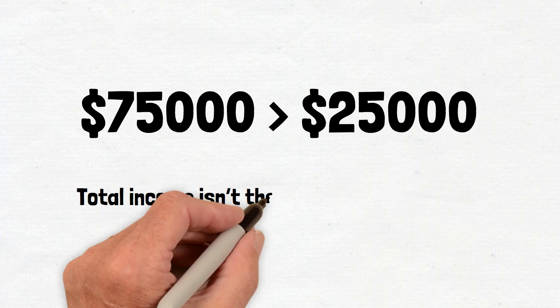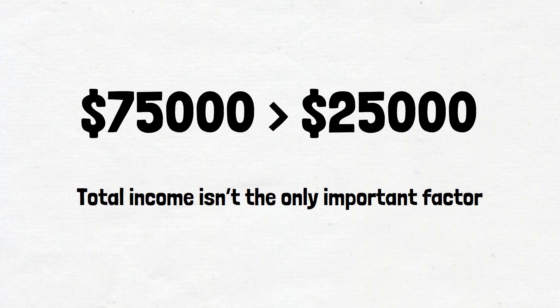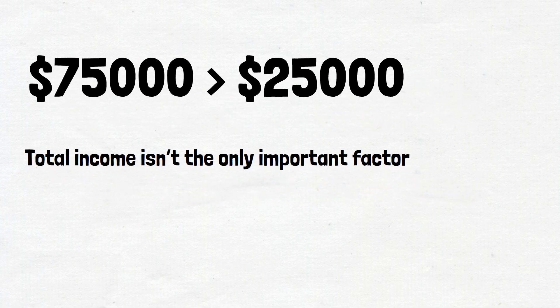However, total income isn't the only important factor here. The person earning $75,000 will not be able to save and invest anything if their expenses are equally as high. To highlight the importance of investing your money as you save rather than leaving it in a bank account, consider the following example.